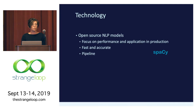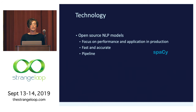In terms of technology, we used spaCy, which is a Python library. It's open source and comes with a number of neural models for several languages, including English. It's focused on performance and production application, which means it has fewer functionalities compared to other NLP libraries, but it's very fast and accurate. It comes with a pipeline of NLP modules that are pre-trained and can be used out of the box or customized.